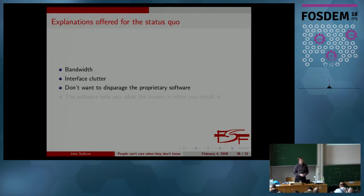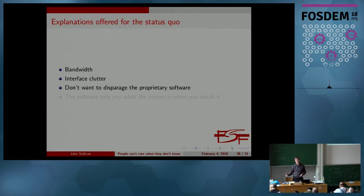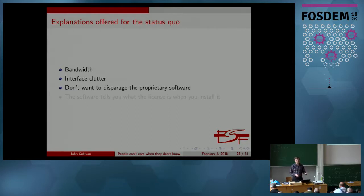A big one was: they don't want to disparage the proprietary software. Especially for things like the Google Play Store and the Windows Store, where they accept a mix of proprietary and free software, they don't want to make their proprietary constituency seem less good. I think when it comes to that one, that's just a clashing world views thing — we do think free software is better. But I think there's probably a middle ground we can find that allows people to make their decisions about whether they want to download free or proprietary software without being too editorial in ways these companies aren't comfortable with themselves.